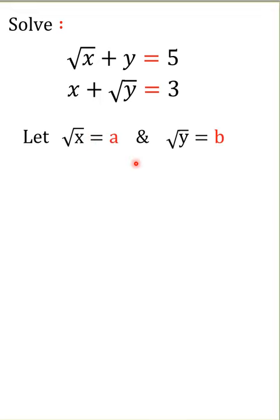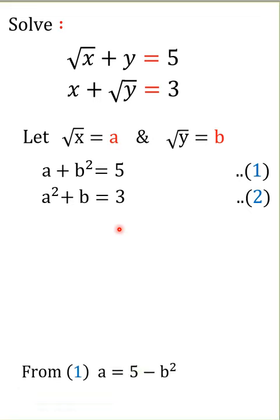Now substitute these values. Equation 1 becomes a + b² = 5, and equation 2 becomes a² + b = 3. From equation 1, we find a = 5 - b². Substitute this into the second equation.